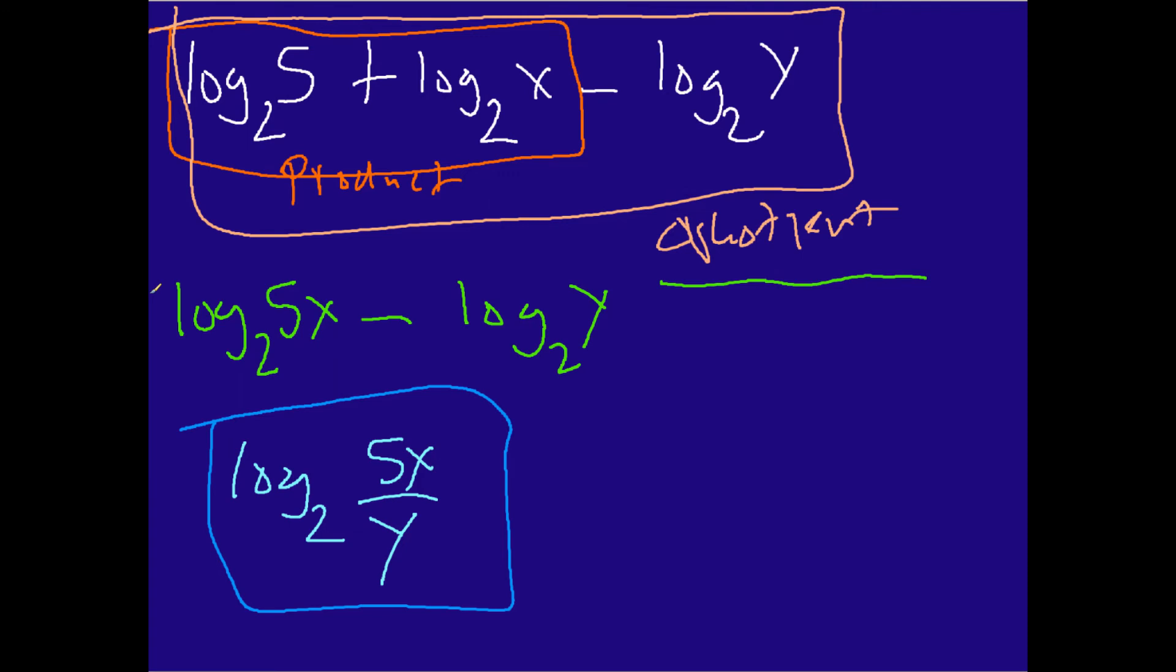In this first example, we started with the product property, and then once we simplified the stuff to the left of the minus sign, we then used the quotient property to kind of wrap up everything and shrink it down as much as we possibly could.